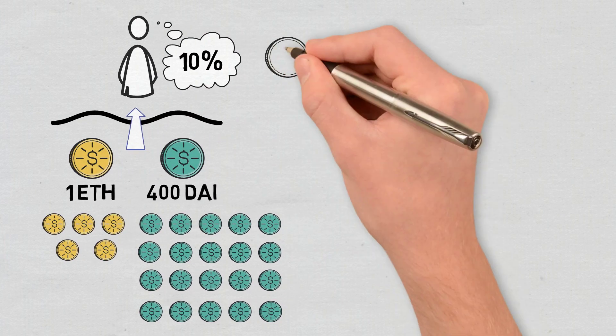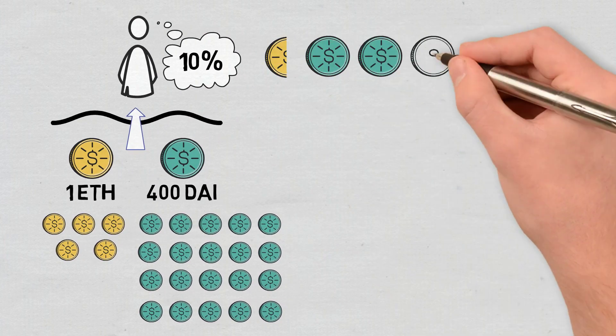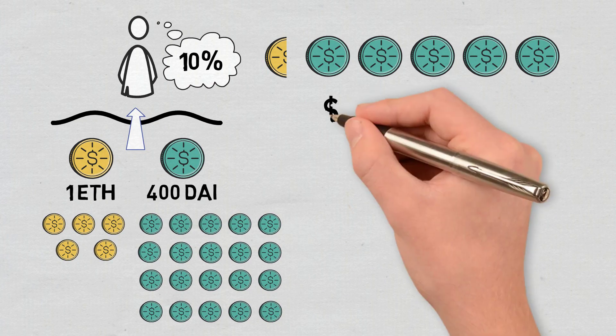So, they can only withdraw 0.5 ETH and 200 DAI, totaling $400.